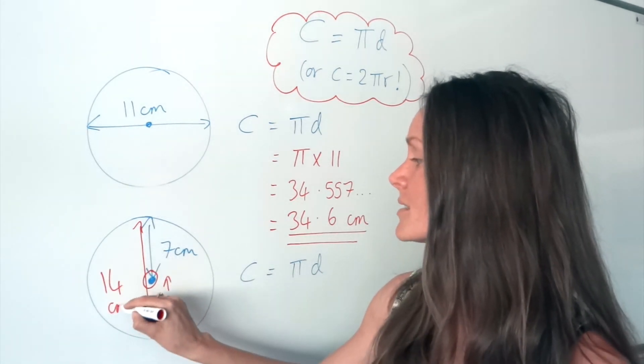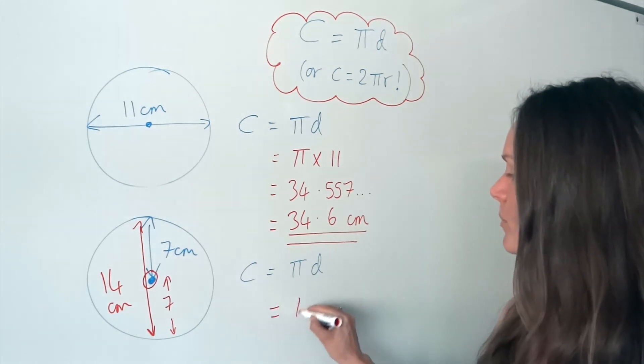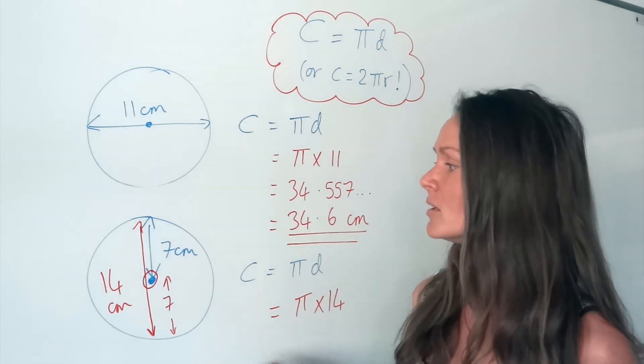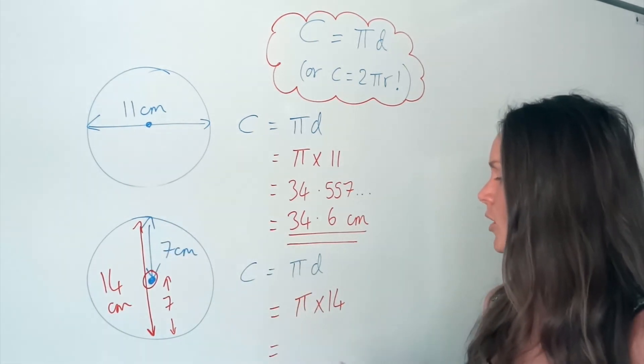So in this question, you have to multiply pi by 14. So you had an extra step in this one. You need to work out the diameter in order to work out the circumference.